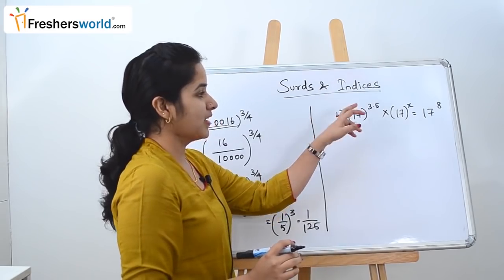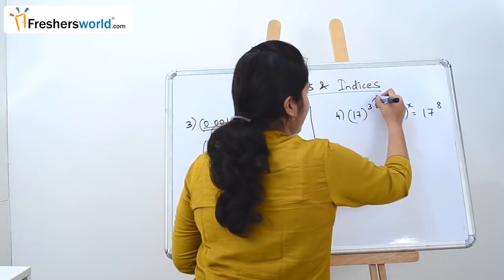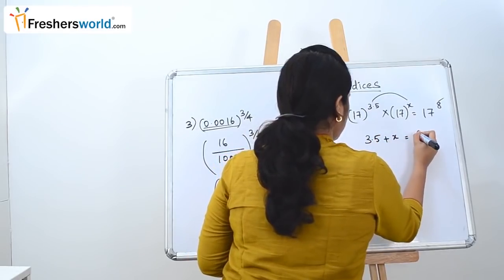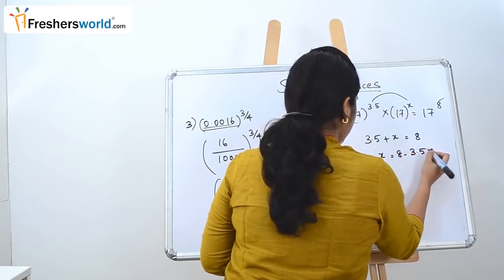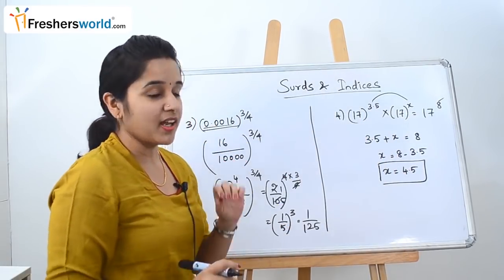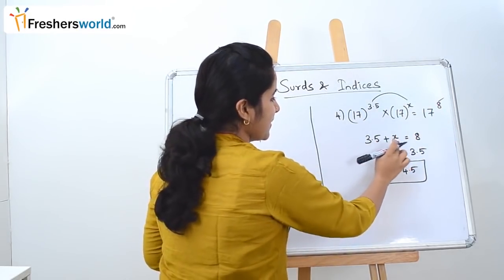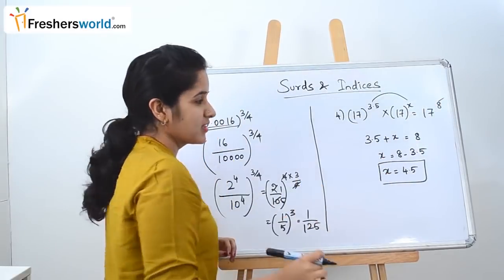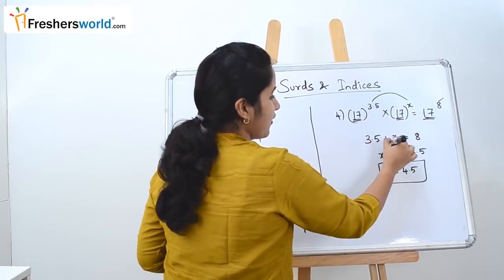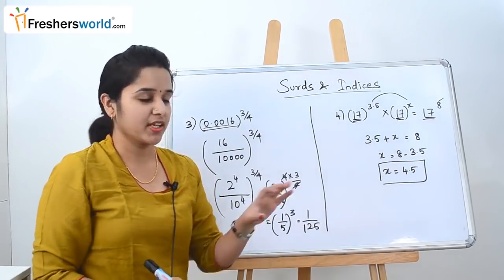The next question is 17 power 3.5 into 17 power x is equal to 17 power 8. Based on the concepts we know, we add the powers: 3.5 plus x is equal to 8. So x is equal to 8 minus 3.5, which is 4.5. We can do this when all the bases are equal — we see 17 across the entire equation. So 3.5 plus x equals 8 and x equals 4.5. This is how we solve such sums.